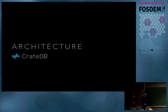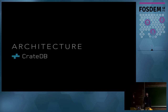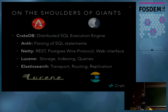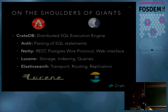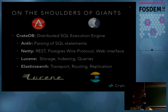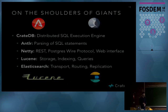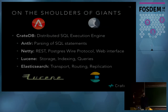What's more important is to look at the architecture. Like a lot of projects, we stand on the shoulders of giants. We are a distributed SQL execution engine with a large number of important dependencies. We use ANTLR — a parser generator — to parse our statements and generate an abstract syntax tree. We have Netty for all communication: REST interface, Postgres protocol, and web interface. We use Lucene for storage, indexing, and our internal query format generated from the SQL query. And we use Elasticsearch for transport, clustering, and routing. This lets us concentrate on the SQL execution layer.